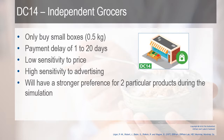The final distribution channel is DC 14 — independent grocers. This is a smaller grocery store that doesn't have a lot of space, so they only buy small boxes. There's a payment delay of one to 20 days — sometimes they pay quickly, sometimes 20 days later. They have a low sensitivity to price, more like a corner store where it's convenient to buy. There is a high sensitivity to advertising, so your marketing will have more of an effect here. Each of these customers has a stronger preference for two products during the simulation — it's up to your analytics to find that.